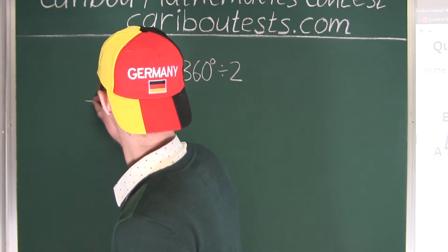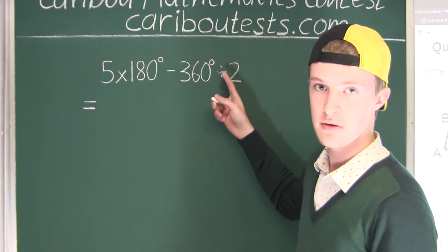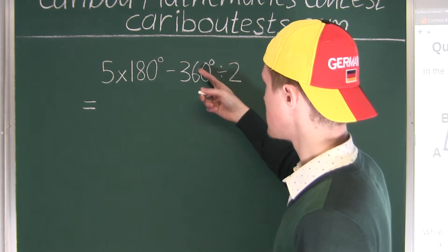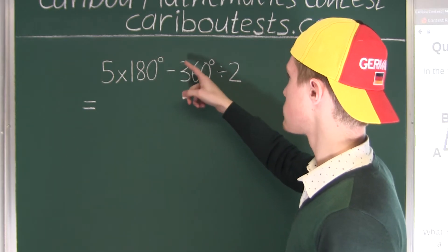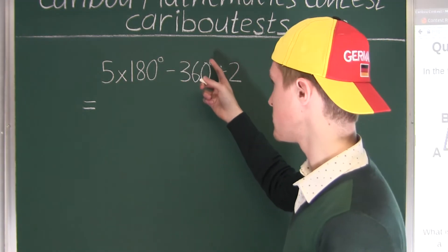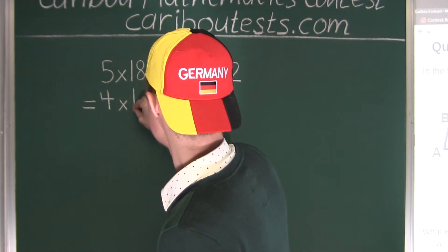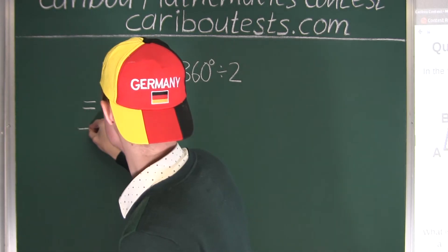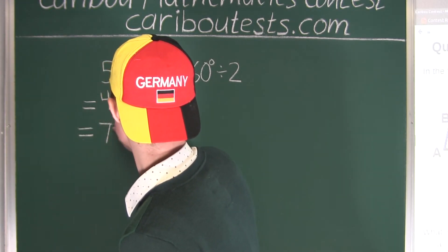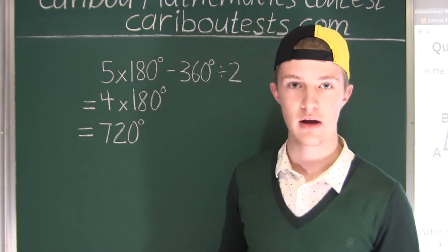And then, this is equal to—well, 360 divided by two, and that's 180 degrees—so it's like five times 180 degrees minus one times 180 degrees, and that's four times 180 degrees. And this is equal to a sum of 720 degrees for all the lettered angles.